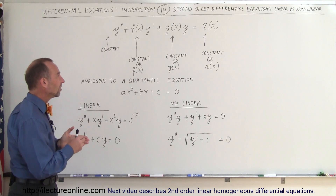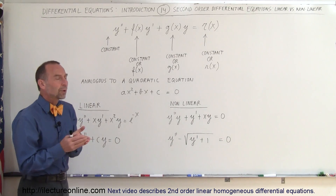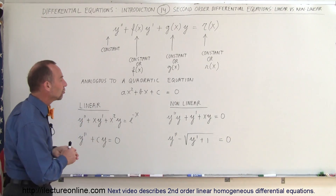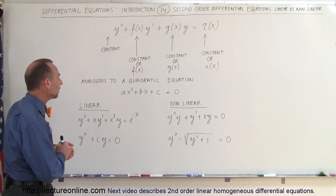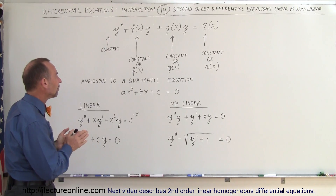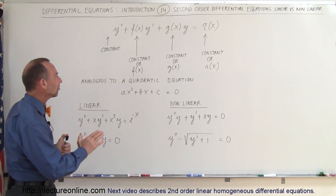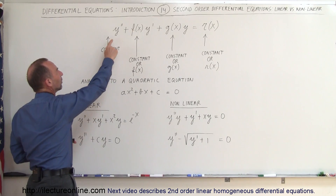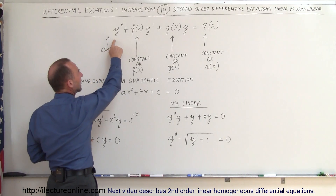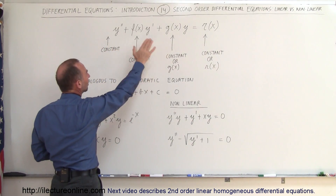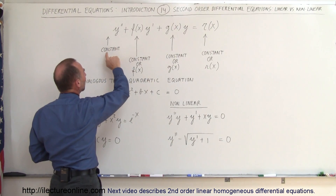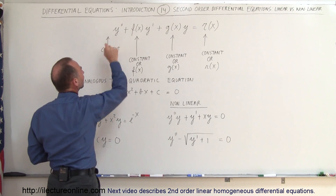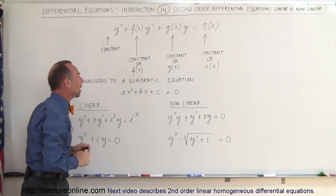What is the difference between what we call a linear and a non-linear differential equation? Let's take a look at the coefficients. For this to be a second order differential equation of the linear type, we have to have either a constant or a one in front of the y double prime.